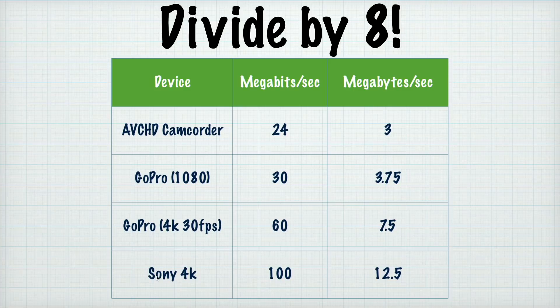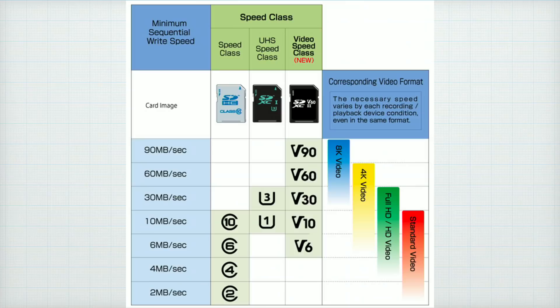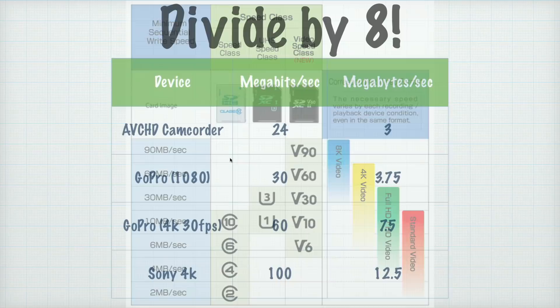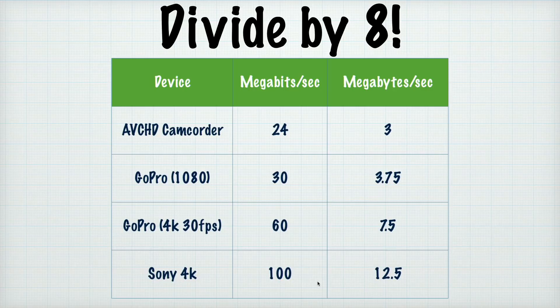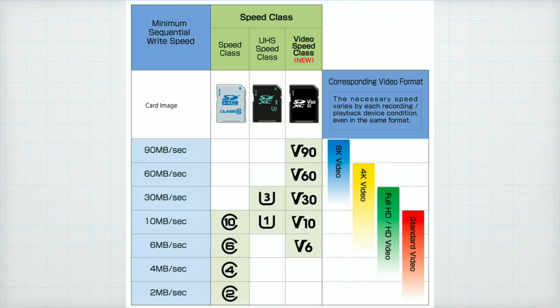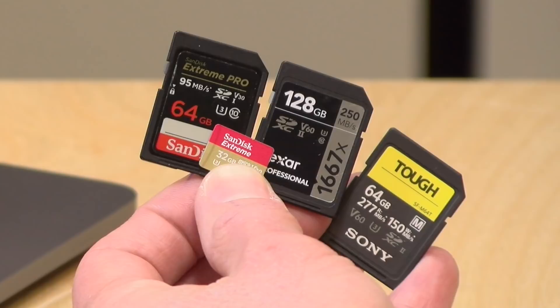Speaking of video, you have to do a little math to figure out exactly what your camera needs. For example, I have a Sony 4K camera that requires 100 megabits per second minimum to sustain the video it's writing to the card. It's important to note that this is megabits per second, not megabytes per second — our cards are measured in megabytes per second. So divide that megabit number by 8: 100 divided by 8 gives us 12.5 megabytes per second, which means a V10 card isn't going to work. But a V30 card will deliver the performance needed to write 4K video. Those SanDisk V30 cards work fine in that Sony 4K camcorder, but check your camera's bit rate specs and then match up the V rating after dividing by 8.